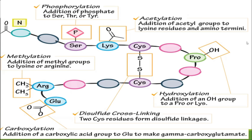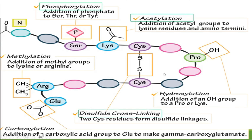Let's take a look at this polypeptide and see how some of the major covalent modifications occur on it. Starting from the N-terminal chain, we can see that phosphorylation is occurring on a serine amino acid, followed by acetylation at the lysine residue with the addition of an acetyl group. Next, cysteine is making a disulfide cross-link with another cysteine molecule in the polypeptide chain. Further on, we can see a proline attached with a hydroxy group — this process is called hydroxylation.